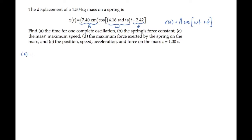Part A asks us for the oscillation's period. That's 2 pi over omega, which is 2 pi over 4.16 radians per second, and it equals 1.51 seconds.